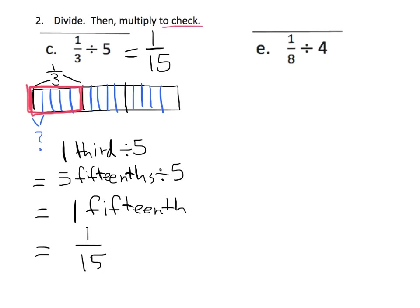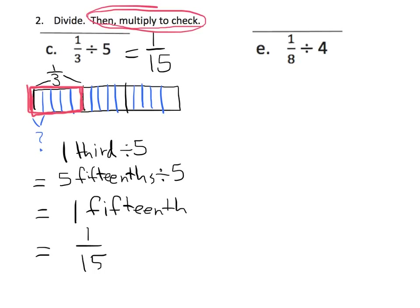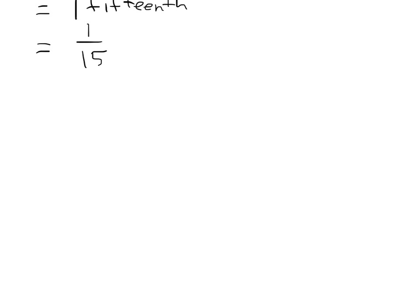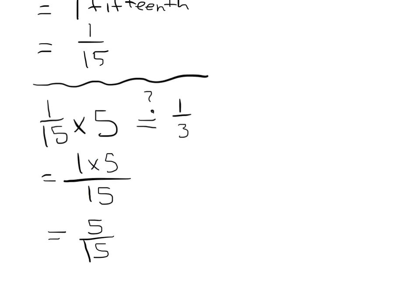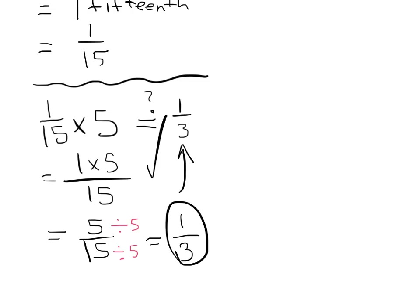The directions say we need to multiply to check that we've done it correctly. We're going to do one-fifteenth times five and hope we get one-third. So one-fifteenth times five: one times five over fifteen gives us five-fifteenths. Both five and fifteen are divisible by five — five divided by five is one, fifteen divided by five is three — so the answer is one-third. That checks out, so we know we are correct.